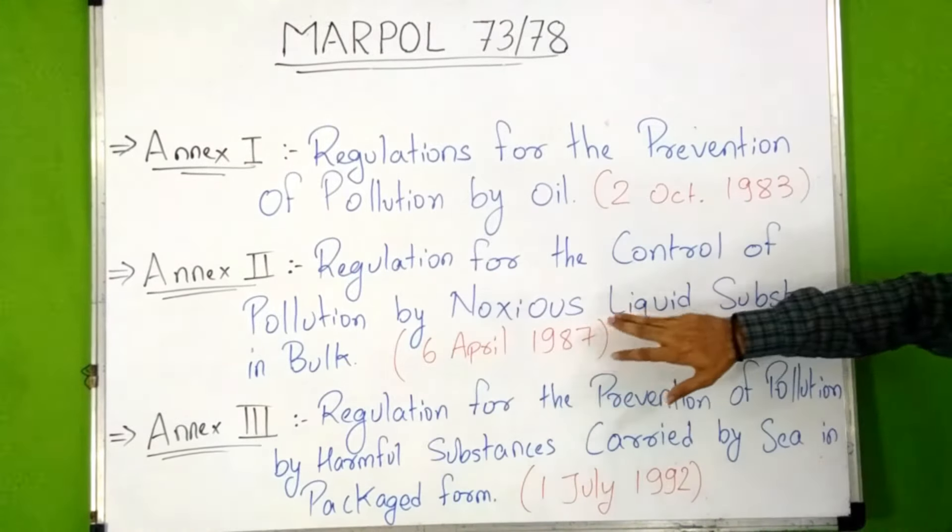Annex IV is the regulations for the prevention of pollution by sewage from ships; it came into force on 27th September 2003. Annex V is the regulation for the prevention of pollution by garbage from ships; it came into force on 31st December 1988. Annex VI is the regulation for the prevention of air pollution from ships; it came into force on 19th May 2005.